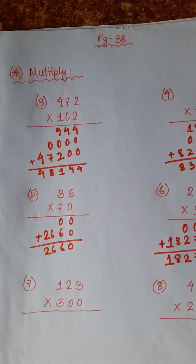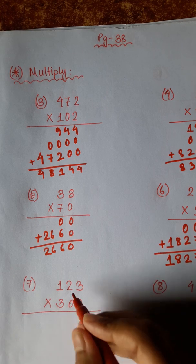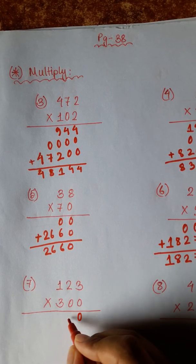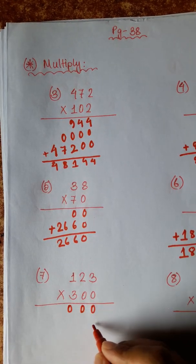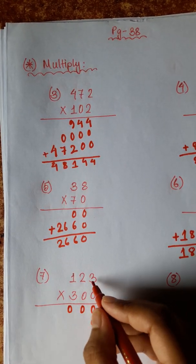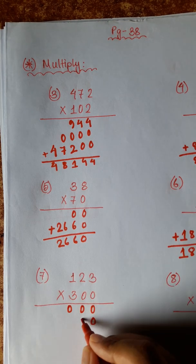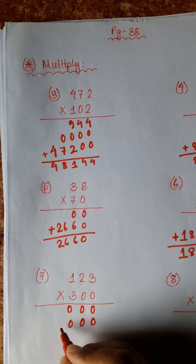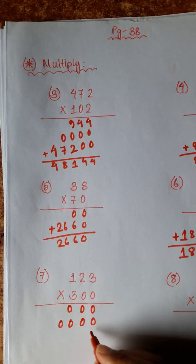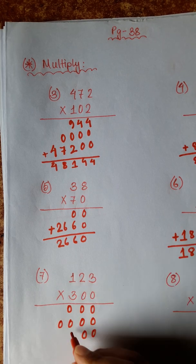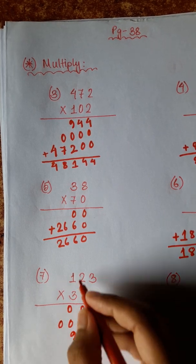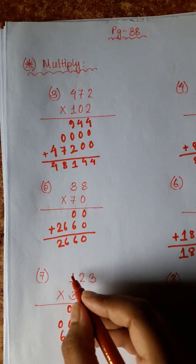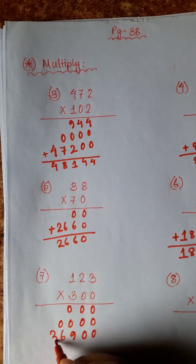3 zeros are 0, 3 zeros are 0, 2 zeros are 0, 1 zero is 0, 3 zeros are 0, 2 zeros are 0, 1 zero is 0. 3 threes are 9, 3 twos are 6, 3 ones are 3.